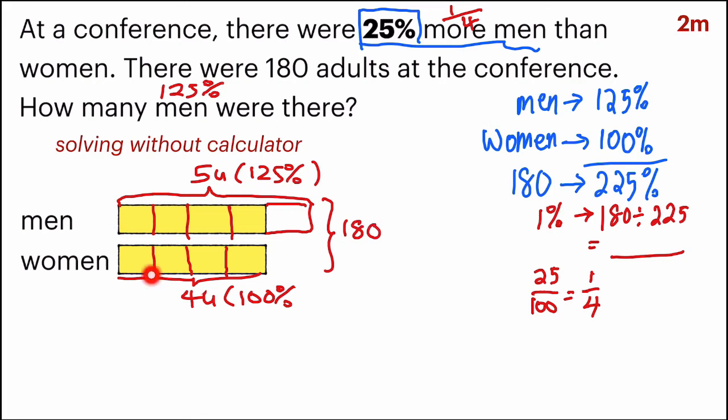Now, using the model and the percentage, can you see a relationship between the two? Well, if you do, you know that one unit is equal to 25%. Same goes to all of this. Each chunk represents 25%.